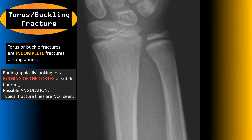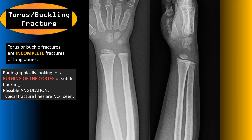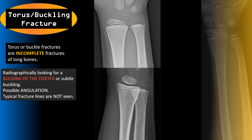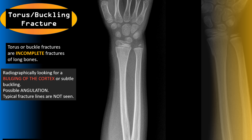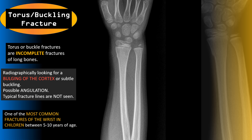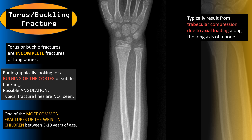A torus or buckling fracture is an incomplete fracture of a long bone, and these can be really difficult to see because there's no true fracture line visible. Instead, what we're looking for is a bulging or subtle buckling of the cortex. When we zoom in close you'll see two small bumps and cortical irregularities representing the buckling fracture. These are one of the most common fractures of the wrist in children between five and ten years of age.